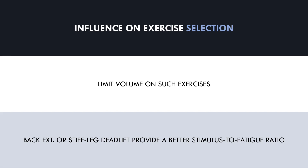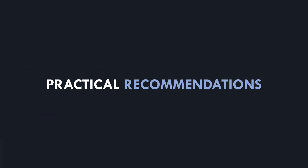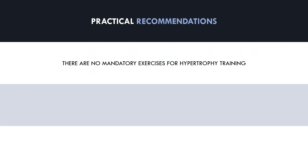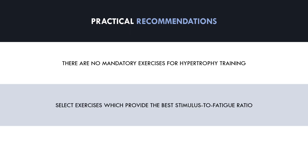To summarize, let's establish some practical recommendations. First and foremost, there are no mandatory exercises for hypertrophy training, so trainees should not become emotionally attached to any specific exercise if their goal is to maximize muscle growth. Instead, focus on what exercises provide the best stimulus to fatigue ratio — the best hypertrophic stimulus and the lowest fatigue cost. This will help trainees achieve the best hypertrophic stimulus per unit of volume and keep training healthy and sustainable for the long term. However, trainees may still want to include some exercises with a poor stimulus to fatigue ratio if they have simultaneous strength goals or simply enjoy those lifts, but volume should be limited to not breach joint tolerance and systemic capacity.